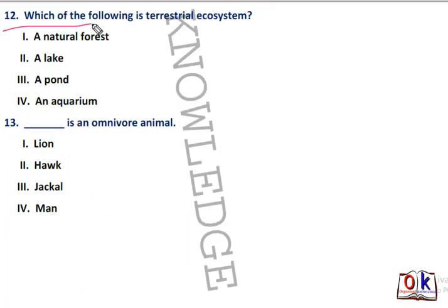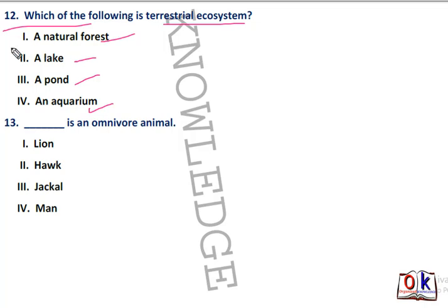Question number 12: which of the following is a terrestrial ecosystem? Options are a natural forest, a lake, a pond, or aquarium. Simple question — first will be the right answer: natural forest.